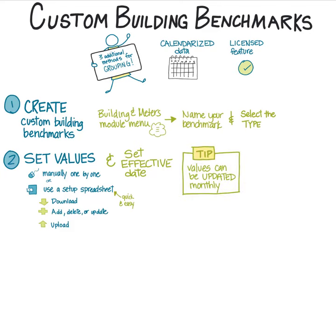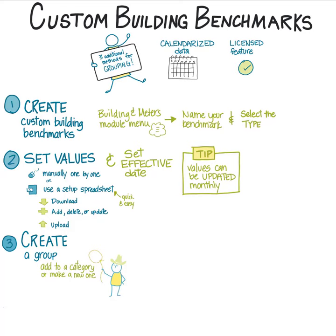Now you are ready to create your group. Go to the Groups and Benchmarks module and create a new group. Here you have the option of adding your group to an existing category or creating a new one. To use your new custom building benchmarks, select an automatic group. An automatic group is kept up to date for you by EnergyCap, using filters you configure.